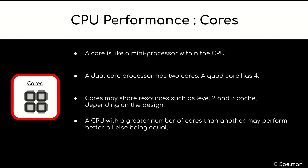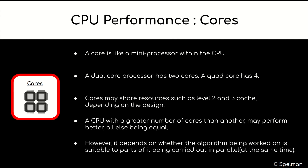A CPU with a greater number of cores than another may perform better, all else being equal. However, it depends on whether the algorithm being worked on is suitable to parts of it being carried out in parallel at the same time.